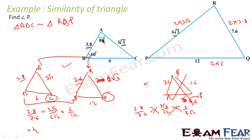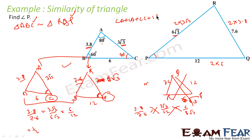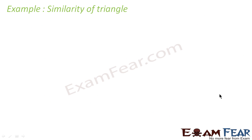So angle P is equal to 40 degrees — that is the answer. Let us take one more example. A girl of height 90 centimeters is walking away from the base of a lamppost at a speed of 1.2 meters per second. If the lamp is 3.6 meters above the ground, we have to find the length of her shadow after 4 seconds.